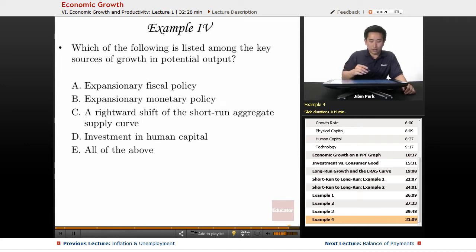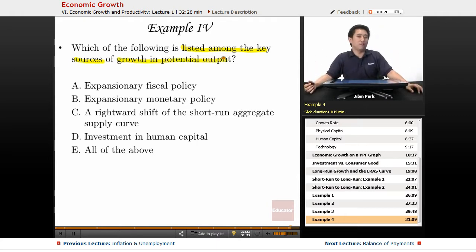Example number four, let's go over this here, the final example. Which of the following is listed among the key sources of growth in potential output? So what's going to really help an economy out in the long run? Let's see if any of these examples resonate.